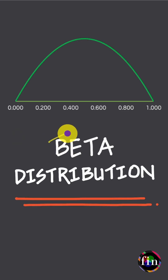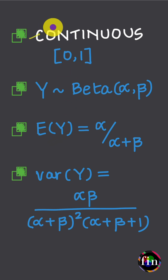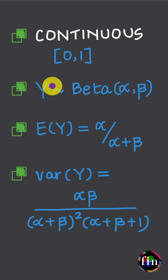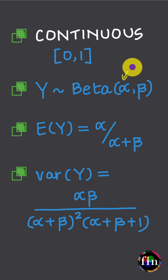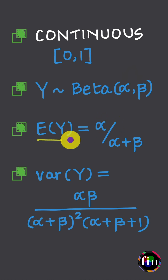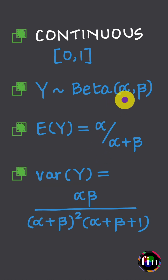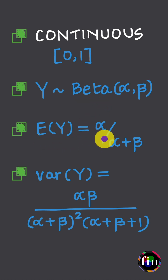Let us look at all we need to know about the beta distribution. This distribution is appropriate for a continuous random variable that is allowed to take values between 0 and 1. If my random variable y follows the beta distribution, it means that there are two parameters alpha and beta which collectively determine the expected value of y and the variance of y. If I set alpha to be equal to beta, my beta distribution will be symmetric and its expected value is equal to half.